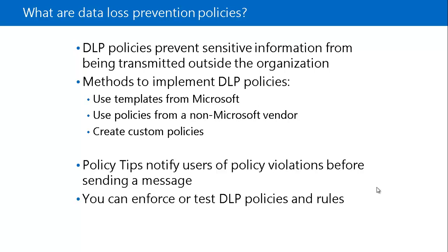Some rules in a DLP template include a policy tip, which is similar to a mail tip. Whenever a user tries to compose a message, the policy tip is displayed in Outlook or in Outlook Web App, allowing the user to correct the issue before sending the email. You can also enforce or test the DLP policy rules before applying them — if you want to test it first, you can test the DLP policies before enforcing.